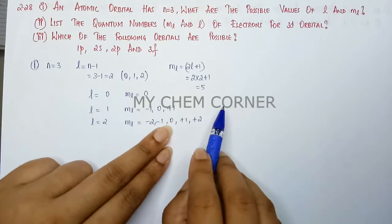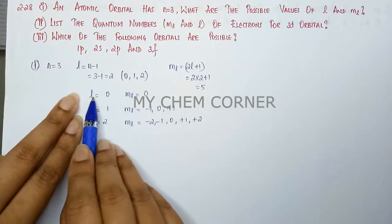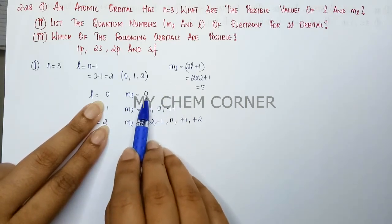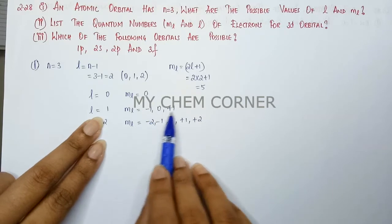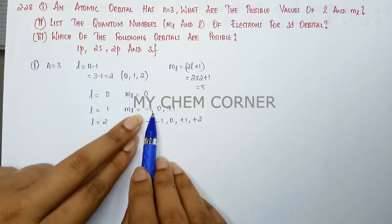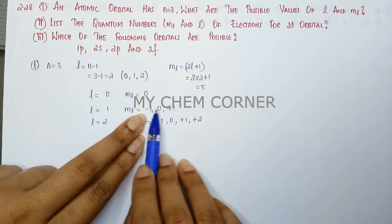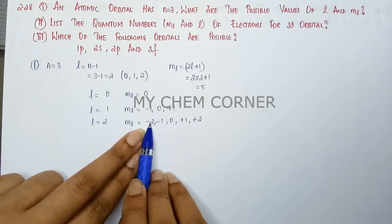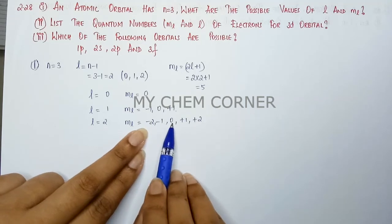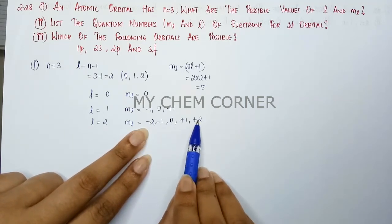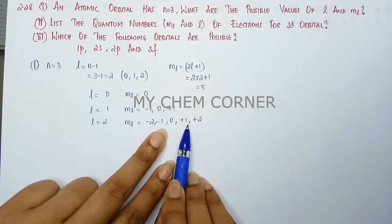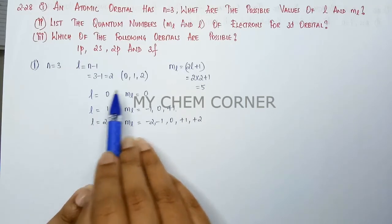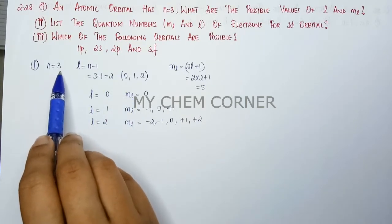These values depict the orbitals. When l is 0 it is the s orbital, which has only one value. When l is 1 it is the p orbital, giving three orbitals: px, py, pz. When l is 2 it is the d orbital, giving five orbitals: dxy, dyz, dxz, dx² minus y², and dz². These are the possible l and ml values for principal quantum number n equal to 3.